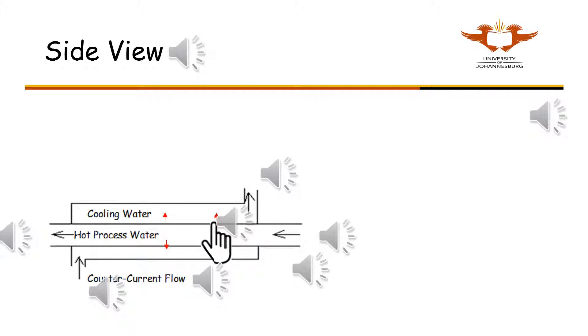The small red arrows indicate that the heat transfer takes place through the inner pipe wall, i.e., through a cylindrical solid.